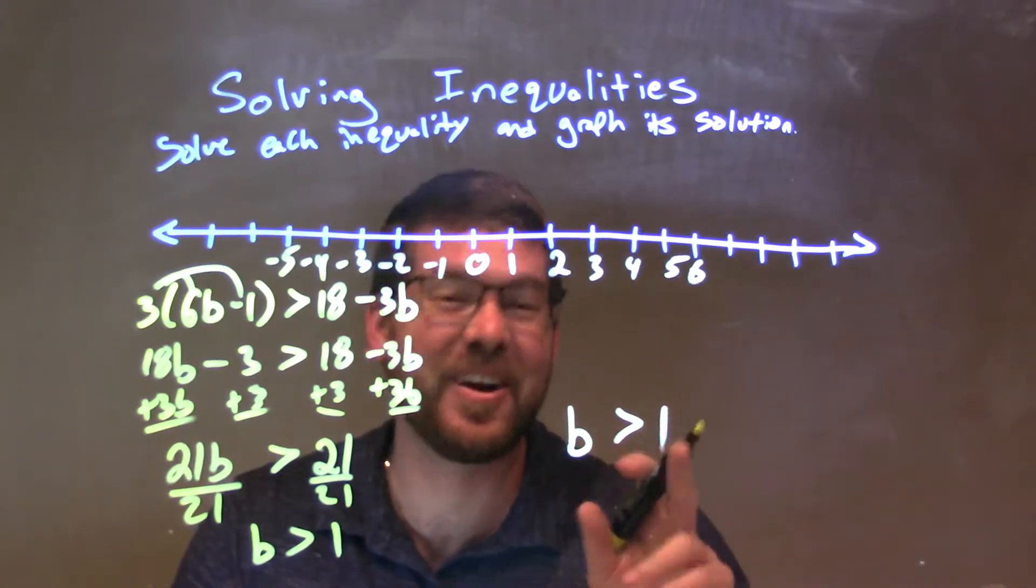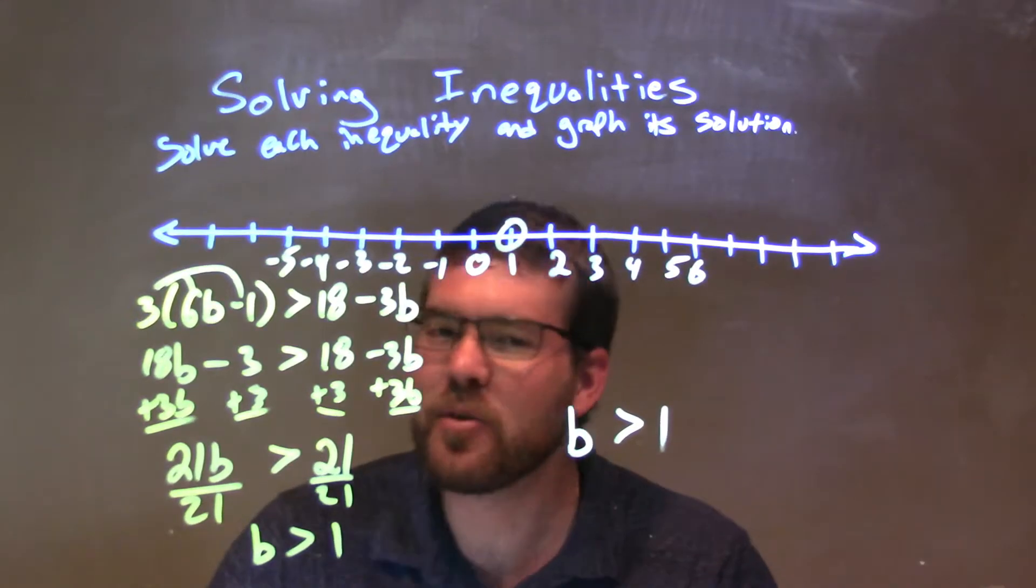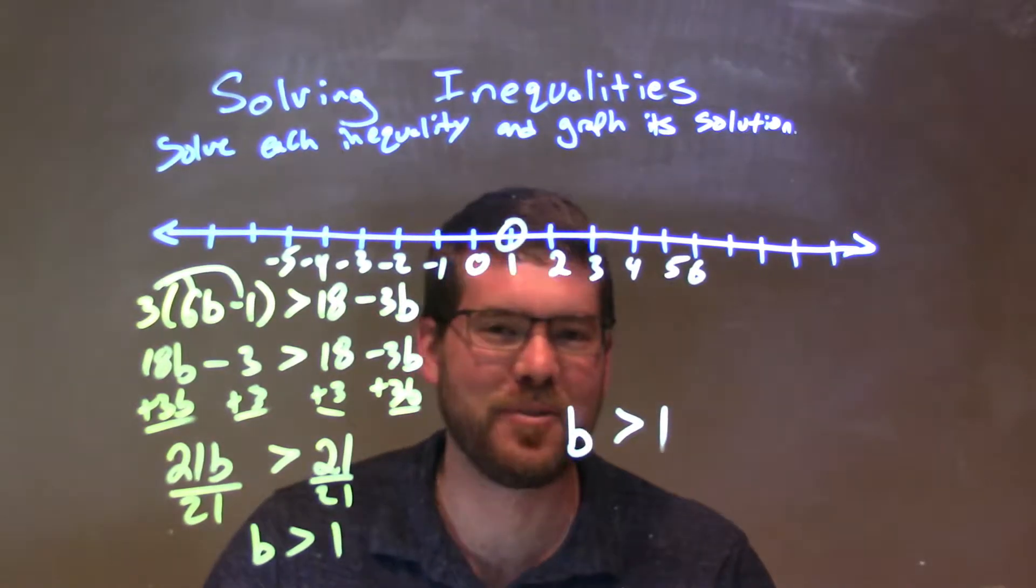Or, sorry, greater than 1. Not 0, greater than 1. Be careful, guys. Greater than 1. Put an open circle at 1. Well, b is also greater than 0, but that doesn't really help us too much here.